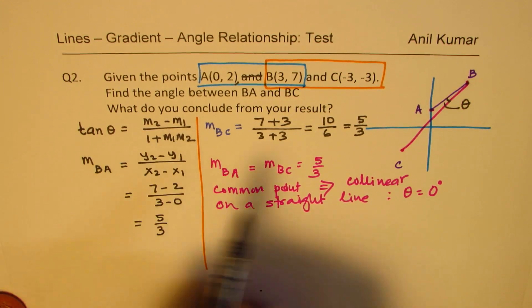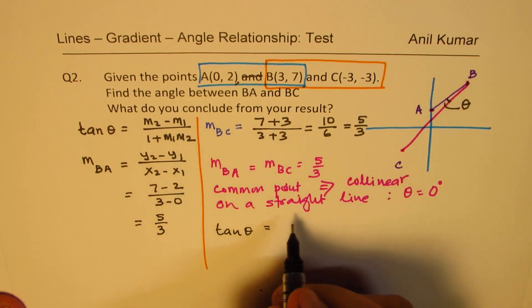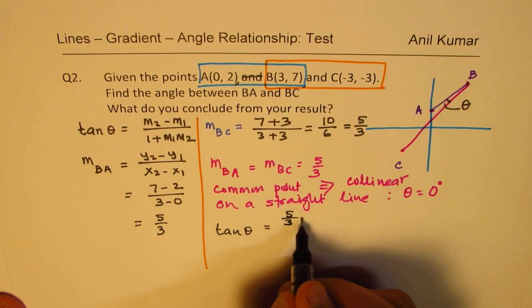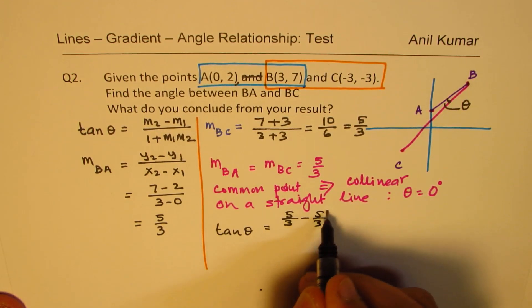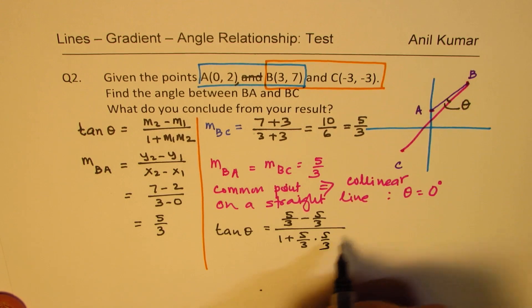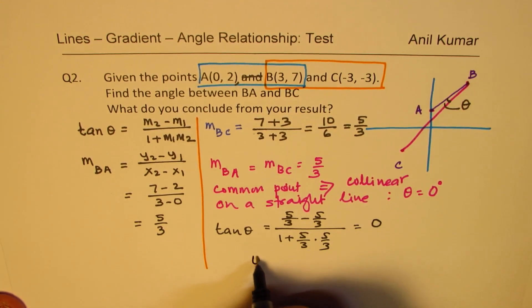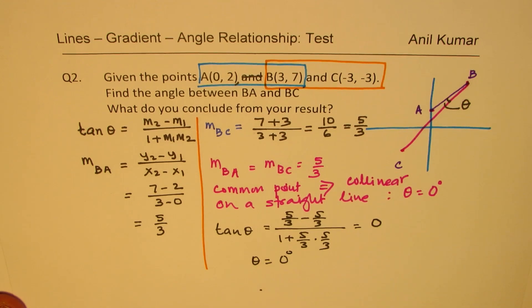Now the formula also gives you the same result. We get tan θ equals M2 minus M1, which is 5 over 3 minus 5 over 3, which is 0, divide by 1 plus 5 over 3 times 5 over 3, and that is indeed 0. So tan θ = 0 gives us θ equals 0 degrees. So using the formula also, we get the same result.